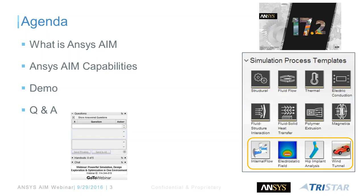From an agenda standpoint, I wanted to do a demonstration on the ANSYS AIM product. Some of you may not be aware of what exactly ANSYS AIM is, so I'll run through a couple of slides quickly talking about capabilities. Then I'll spend most of the presentation time with the software, showing a couple of examples — one with a multi-physics fluid structure simulation and another with a basic structural analysis. Feel free to start typing your questions in the question or chat area.